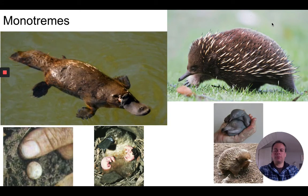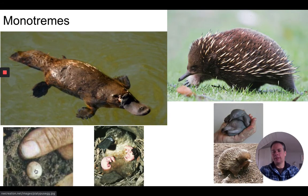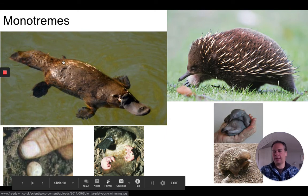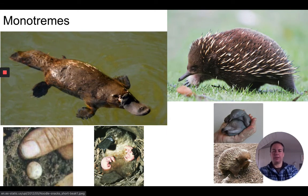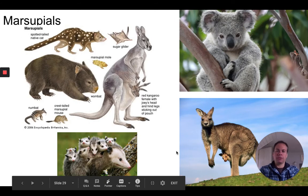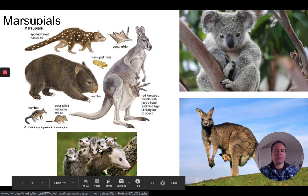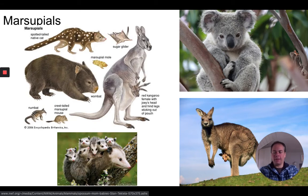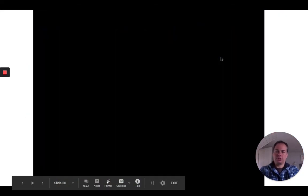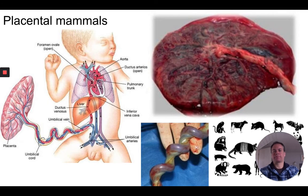The duck-billed platypus is a unique mammal in that it lays tiny eggs rather than giving live birth — it has no internal development. The echidna, or spiny anteater, is the other example of an egg-laying monotreme. Marsupials, like opossums common in our area, give birth to very immature young which finish development in the mother's pouch. There are also videos available showing marsupial birth and development.